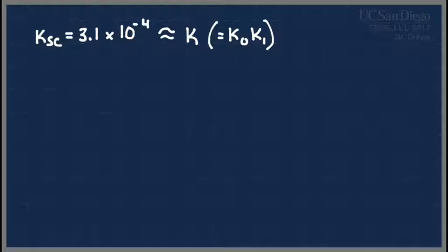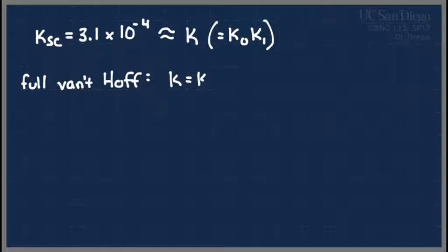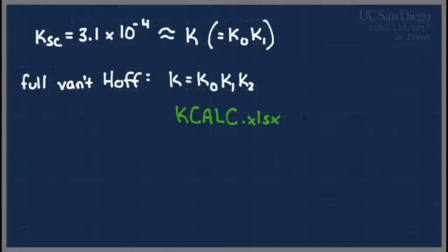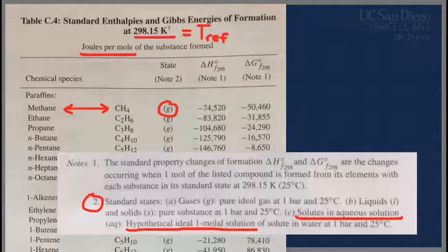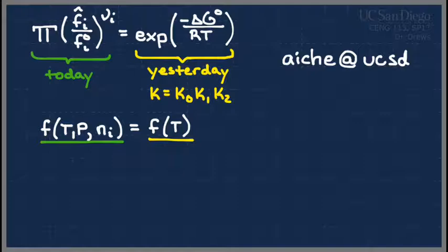If we want to use the full Van't Hoff equation, K = K0 · K1 · K2 — that's the one requiring something extra. This always goes to the kcalc spreadsheet. I'll take a minute to show you how to use that one. Now that we're done with the kcalc spreadsheet, let's look at the π expression and the fugacities — that's what we're spending our time on.